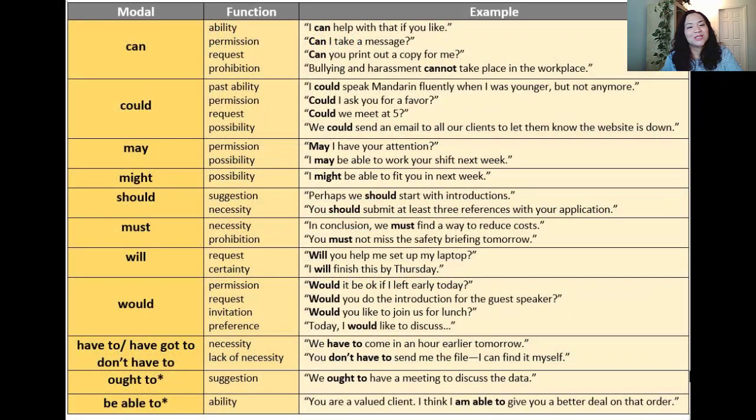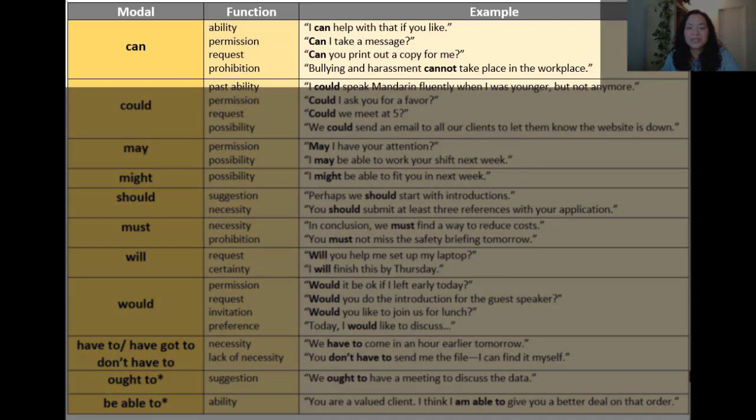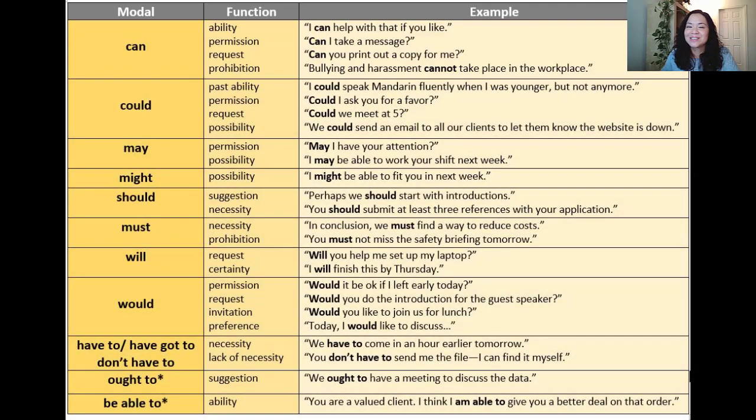What also makes modals confusing, however, is that modals can have several different meanings. For example, using this modal chart, we can see that can can be used to signify ability, like I can help with that if you like. Permission, as in can I take a message? Request, can you print out a copy for me? And prohibition, that information cannot be shared. To make things clearer, let's look at the different functions and the modals that can be used to express them.